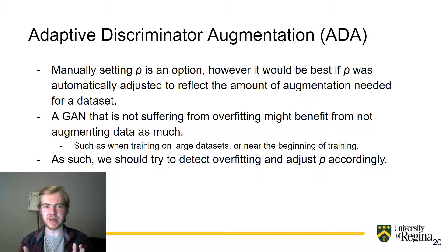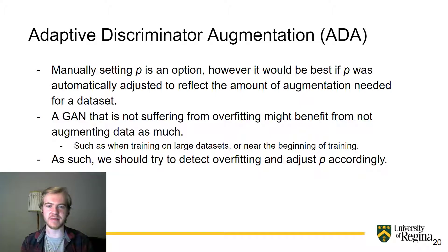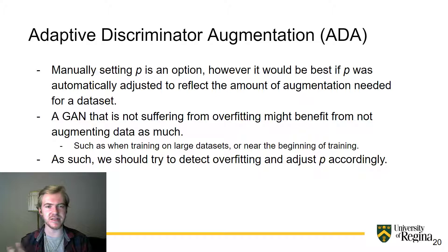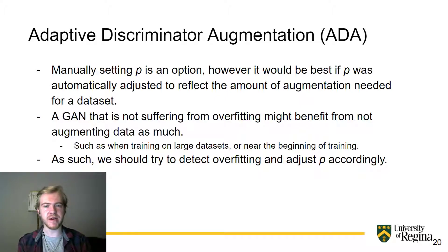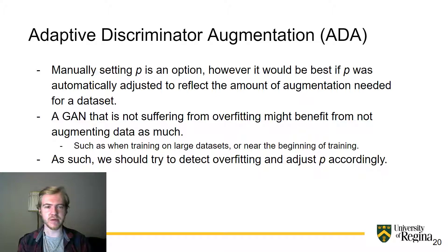Manually setting P is an option. However, it would be best if P was automatically adjusted to reflect the amount of augmentation needed for a data set at any given time. For example, a GAN that is not suffering from overfitting might benefit from not augmenting as much — such as when training on large data sets, or near the beginning of training when no overfitting is occurring at all.